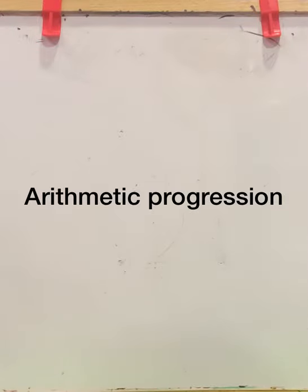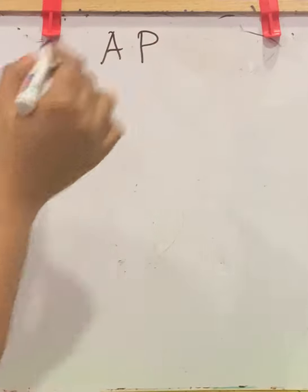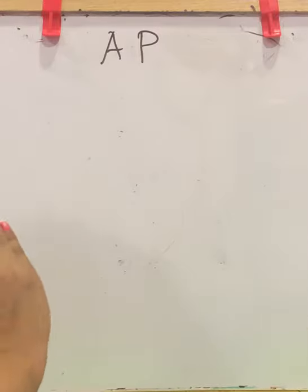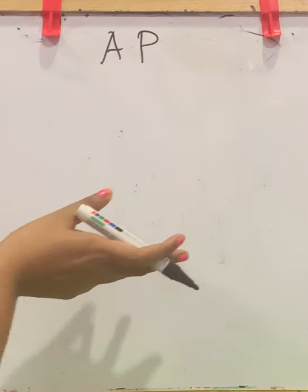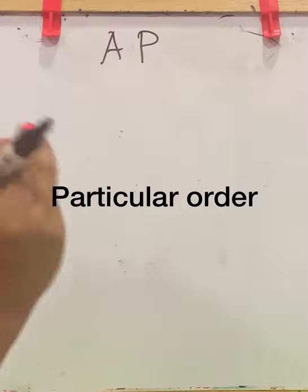Namaste. Today we are going to learn about arithmetic progression. We can call arithmetic progression as AP, and this AP is a sequence. A sequence is a set of related events, numbers, or any items that follow each other in a particular order. There is a particular order for each sequence.